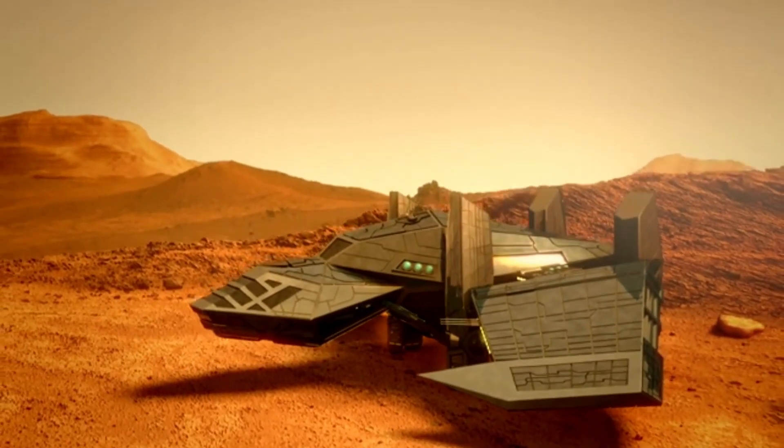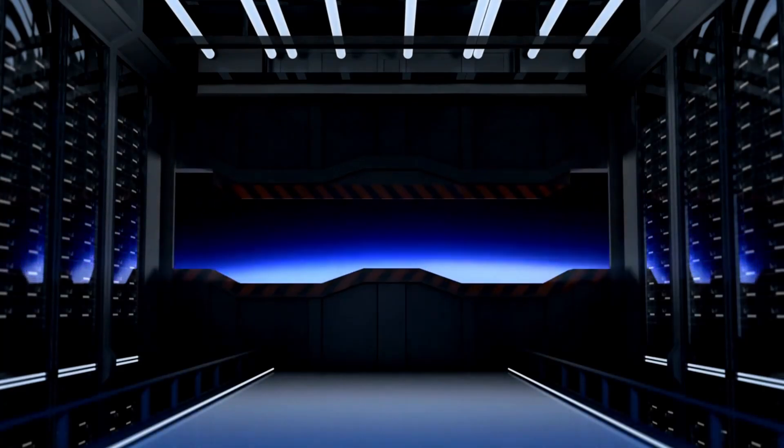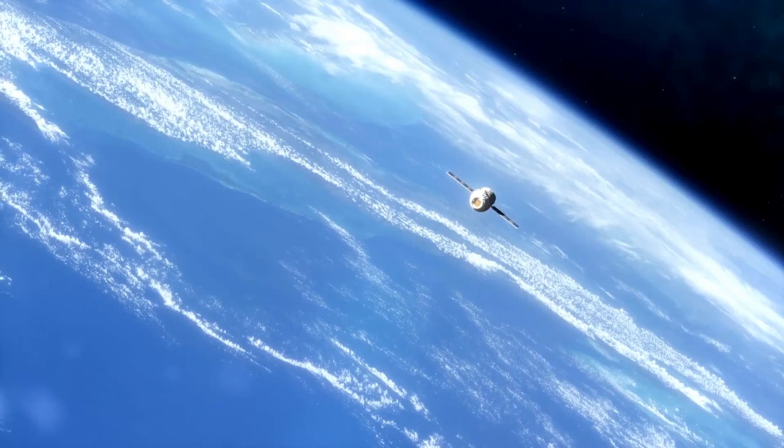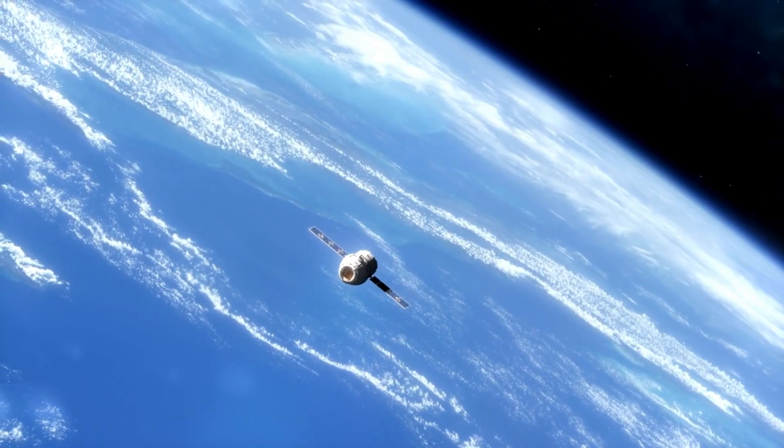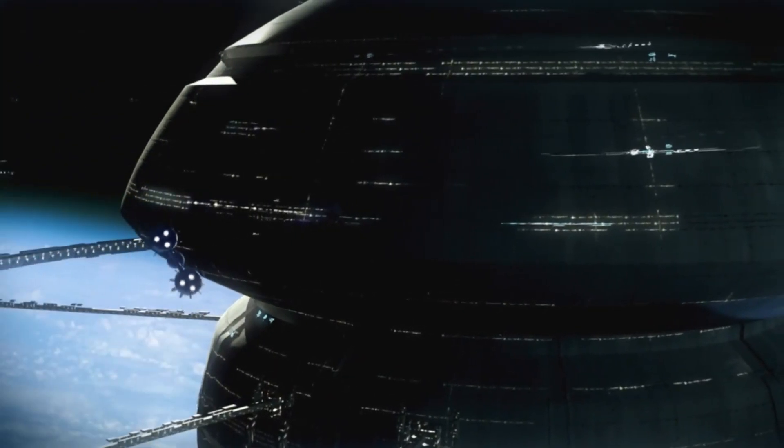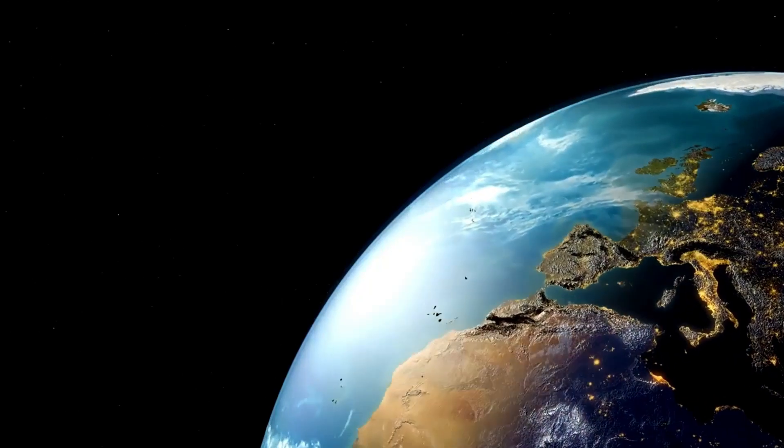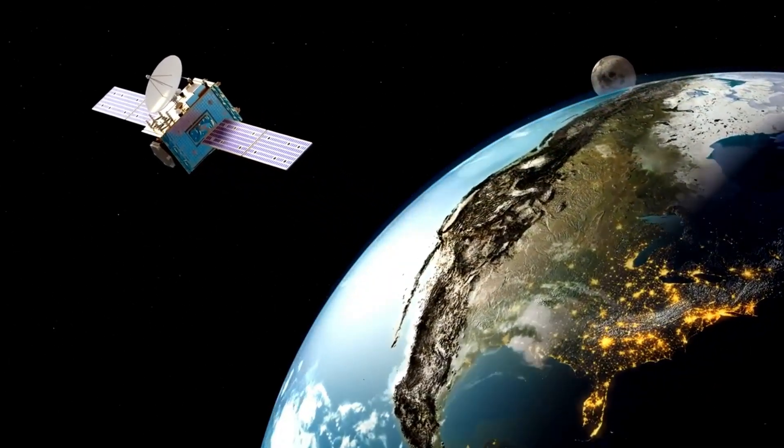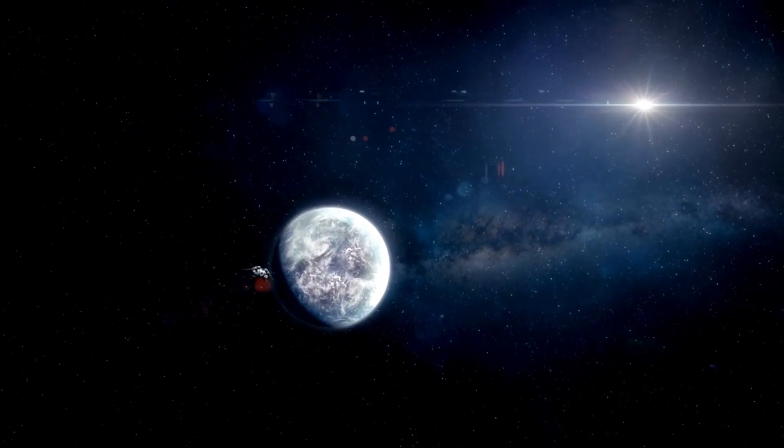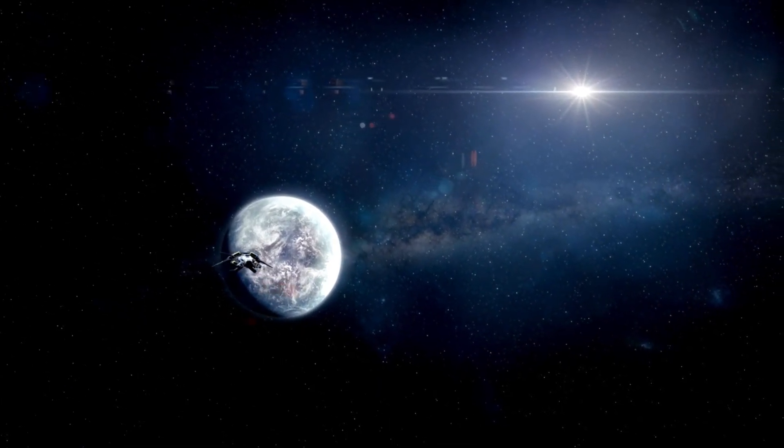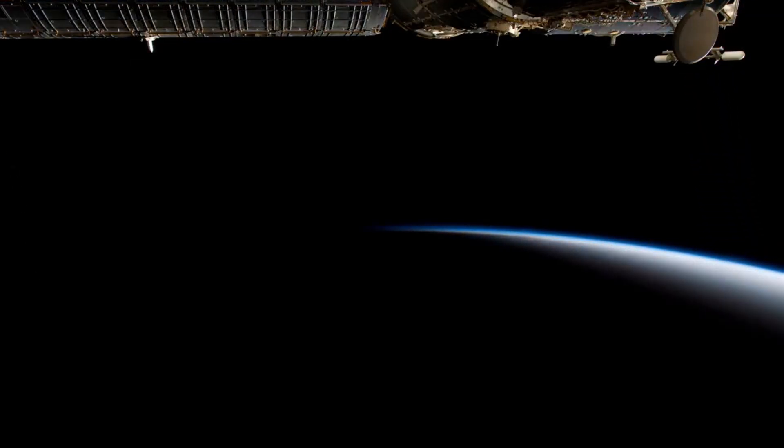Rocket launches contribute to atmospheric pollution through the release of chemicals like chlorine and alumina, which can impact the ozone layer and contribute to environmental contamination. Mitigating these effects is crucial for maintaining Earth's atmospheric health. Space missions must adhere to planetary protection protocols to avoid contaminating extraterrestrial environments. This is particularly important in the search for life on other planets and moons. The proliferation of satellites and large astronomical observatories can contribute to light pollution, which affects both astronomical observations and environmental conditions on Earth.